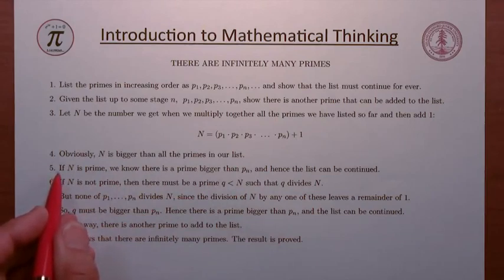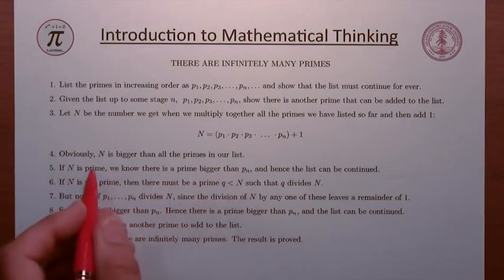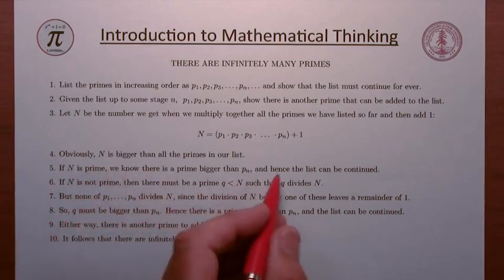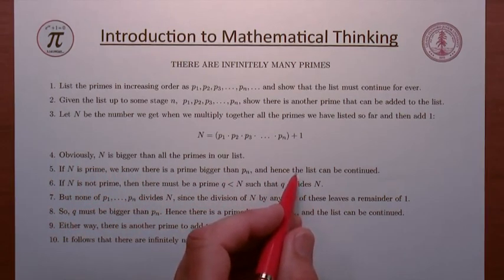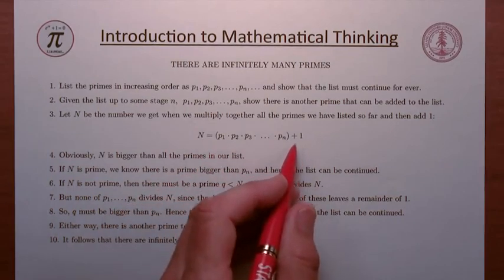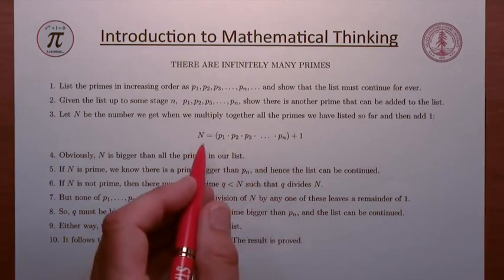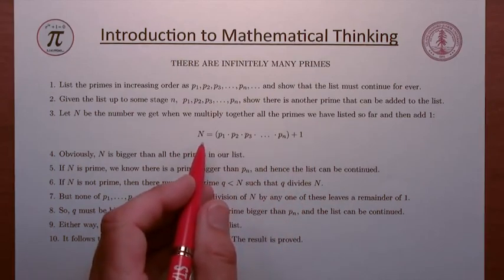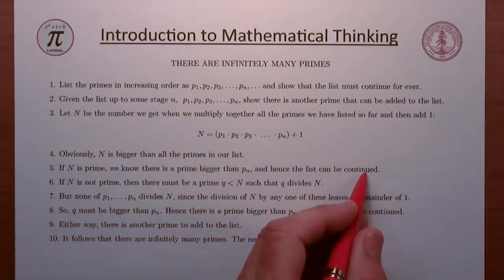If N is prime, then we know there's a prime bigger than Pn — namely, N — and the list can be continued. N is going to be a lot bigger than Pn, so N is almost certainly not the next prime. But that doesn't matter. If N is prime, it shows there is a prime bigger than the one at the end of the list, and that means we can continue the list.